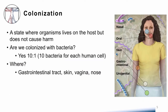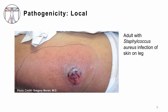Colonization is a state where organisms live on the host but do not cause any harm. We actually have more bacterial cells on us than we have human cells in us — a ratio of 10 to 1. They're living in our nose, in our mouth, all over our skin, in the genitourinary tract, particularly the vagina, and a lot of them are living in the GI tract. We have a huge amount of bacteria, a very diverse flora of bacteria in there. We refer to these as our normal flora — bacteria living in a state of colonization, not causing any disease.